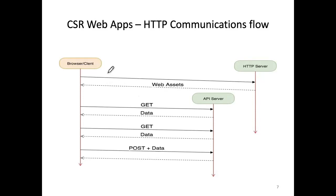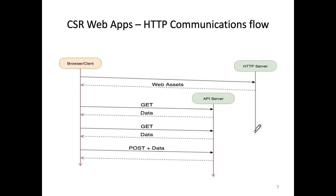The communication flow works like this: the initial request goes from the browser to the static HTTP server, which responds with the web assets. The browser uses those assets to generate a view. From there on, any user interaction triggers the browser to send either a GET or POST request to the web API server, requesting or sending data. The web API server processes the request and responds accordingly, while the static server plays no further role.